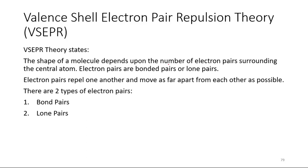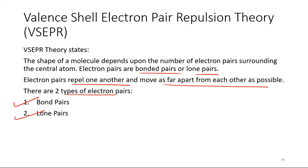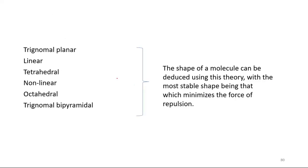Electron pairs are bonded pairs or lone pairs. Electron pairs repel one another and move as far apart as possible. The shapes you have seen include trigonal planar, linear, tetrahedral, non-linear, octahedral, and trigonal bipyramidal. The most stable shape is that which minimizes the forces of repulsion.